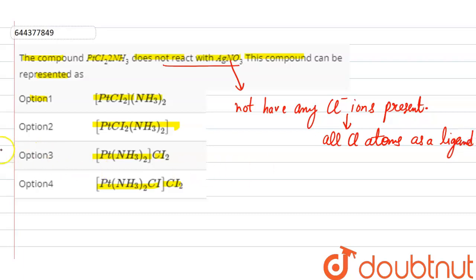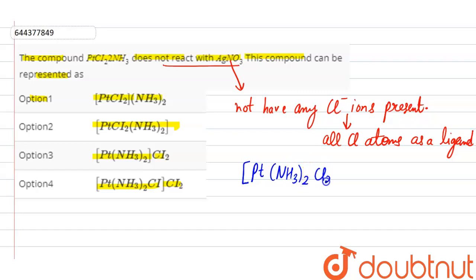So, that means the complex will be Pt(NH3)2Cl2. This will be the complex. So, the second option is the correct option.